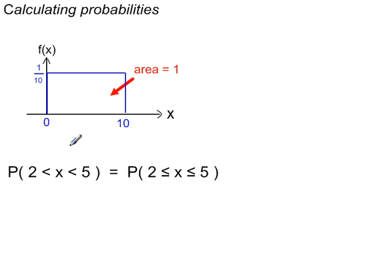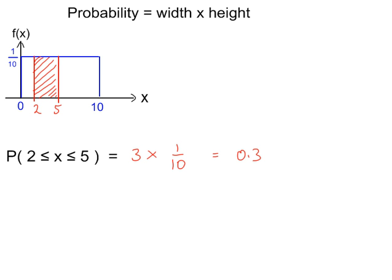Working out a probability: x between 2 and 5 is exactly the same as x greater than or equal to 2 and less than or equal to 5. For a continuous distribution like this one, the equality signs are not doing anything — just like in the normal distribution. The probability is the area of this region, which is width times height: width of 3 times height of 1 tenth gives a probability of 0.3.